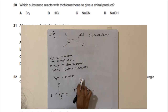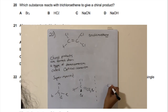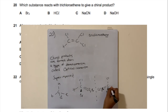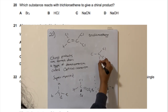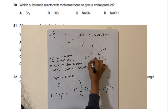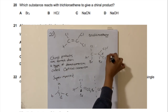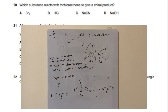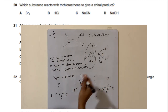Adding bromine across the double bond breaks it, giving a product where one carbon has: Br, H, Cl, and a CCl₂Br group — four different substituents, creating a chiral centre. The mirror images of this carbon are non-superimposable, confirming optical isomerism. This carbon works because the other carbon has two identical chlorines, disqualifying it.